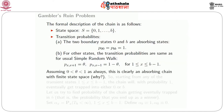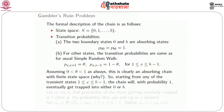We assume that θ is strictly between 0 and 1. This is clearly an absorbing chain with finite state space — absorbing because we have two absorbing states 0 and b. The states between 1 and b−1 are all transient because, starting from any of these states, you can reach both 0 and b. Therefore, starting from any transient state x between 1 and b−1, the chain will with probability 1 eventually get trapped into either 0 or b.